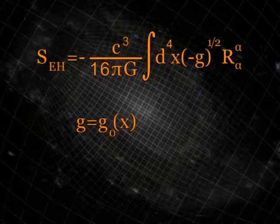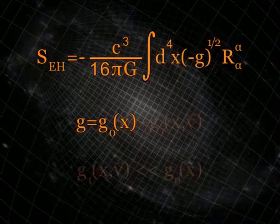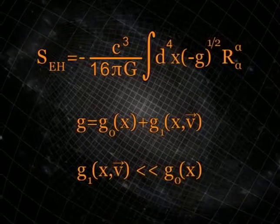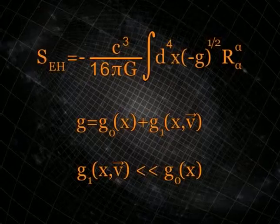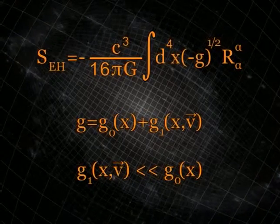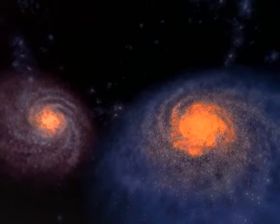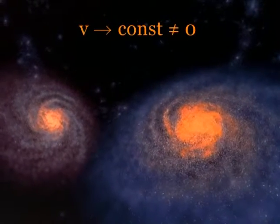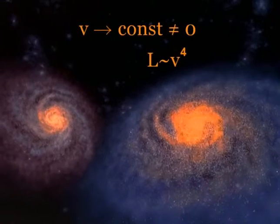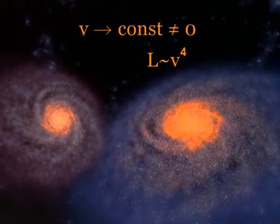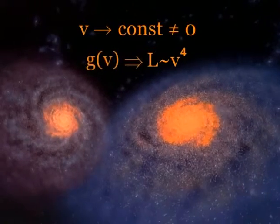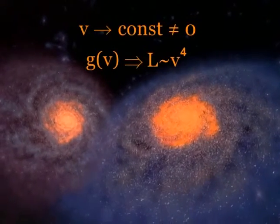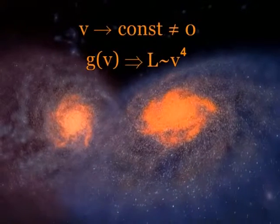Yet it turns out that if one takes such a metric — takes it in the form we are accustomed to and adds a small correction, a small one but depending on these velocities or equivalently on directions — and then carries out the full formalism, it turns out one can explain the flat rotation curves (which come out constant), and the Tully-Fisher law is also obtained — it arises simply because the metric of space is chosen in this way. Space has become anisotropic; at different points it has acquired a curvature depending on the direction of motion.